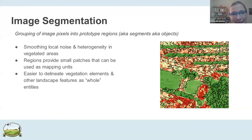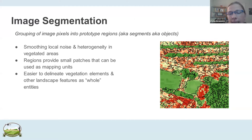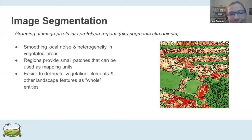We will also practice image segmentation, which is a technique for delineating regions within the image. Those regions can be used as mapping units instead of individual pixels or grid cells. With very detailed drone data, this technique can be very helpful for smoothing local noise and helping us tackle the landscape in a more holistic way — actually getting at various landscape elements in their geometric and conceptual entirety, rather than working with little grid cells that can be quite noisy and speckled locally.